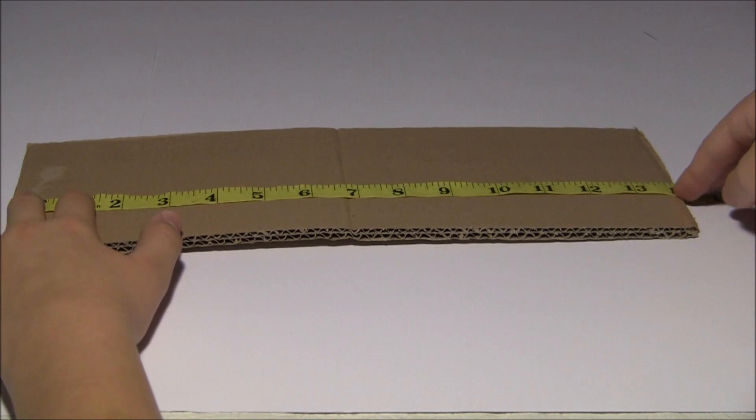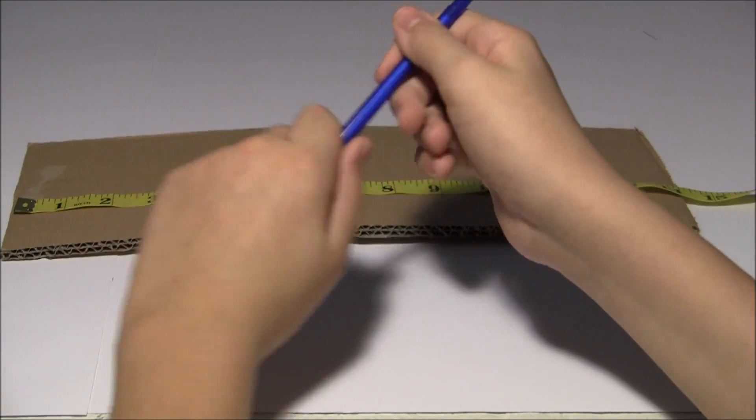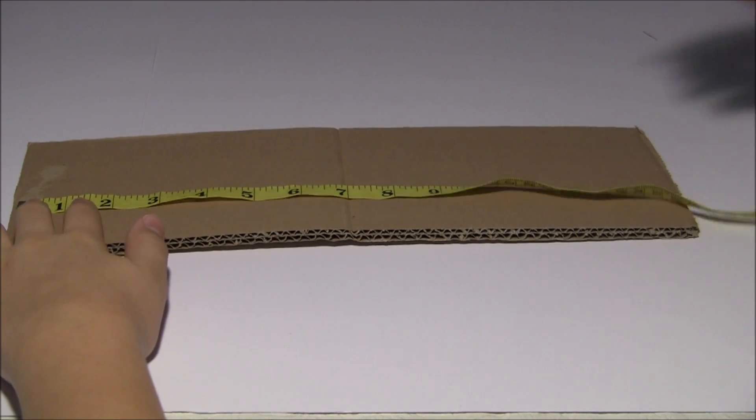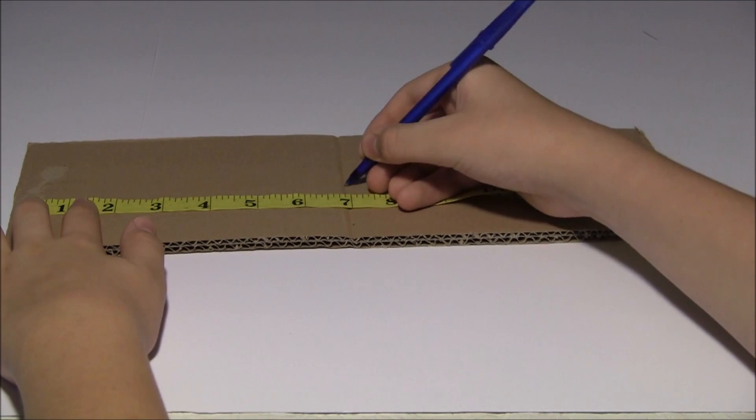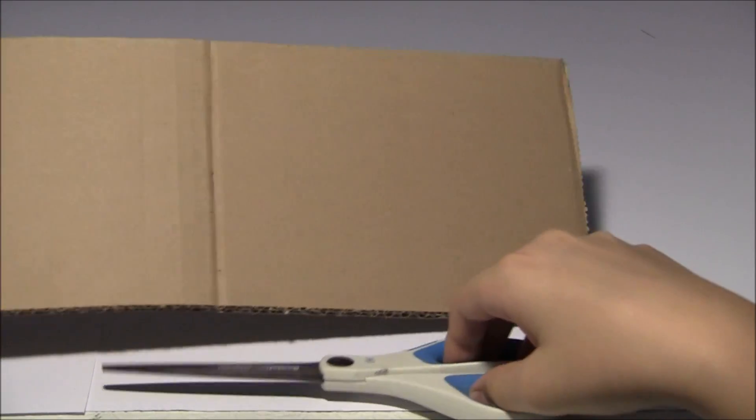Use a pen to mark the cardboard at its halfway mark. Then, just cut the cardboard in half with your scissors.